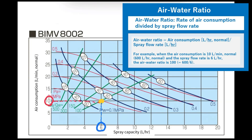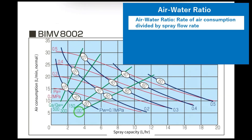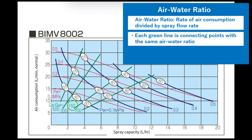So in terms of ratio, the air-water ratio is 600 over 6, which means for one part of water, 100 parts of air is used. This green line indicates all the points with the same air-water ratio of 100. Similarly, the green lines at 150, 300, and 500 indicate points with the same air-water ratio.